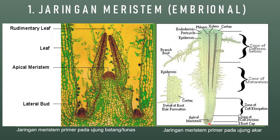Gambar yang kedua merupakan gambar jaringan meristem yang terdapat pada ujung akar. Sama halnya seperti ujung batang, pada ujung akar juga terdapat jaringan meristem yang sel-selnya aktif membelah. Sel-sel yang aktif membelah pada jaringan meristem tersebutlah yang menyebabkan akar menjadi bertambah panjang. Tujuan akar bertambah panjang yaitu untuk mencari sumber hara dari dalam tanah atau untuk mencari sumber air.